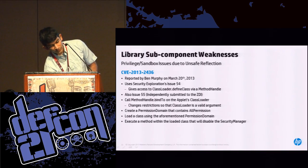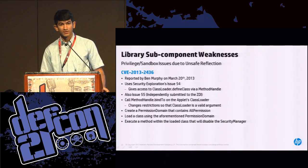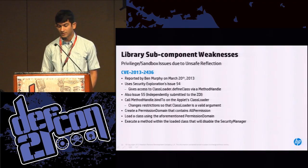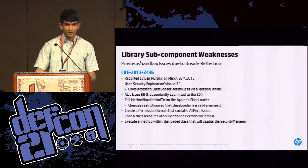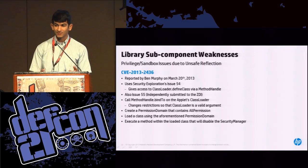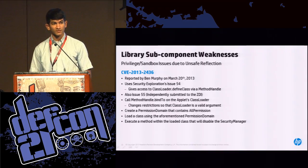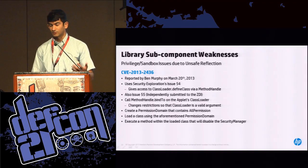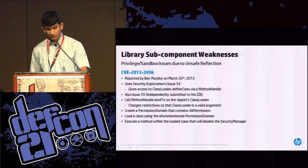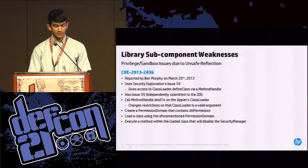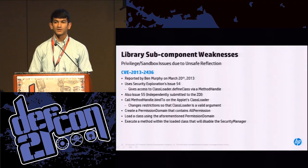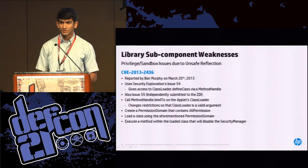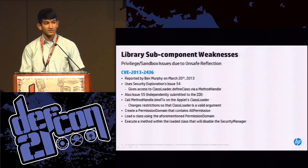The first bug is in the library subcomponent — a privilege and sandbox issue due to unsafe reflection. As a quick primer: imagine you have a dispatch method that takes a string and some arbitrary number of arguments; based on the string, it looks up a function and makes a call. Unsafe reflection is when you don't have proper validation on that string such that you could call a delete-everything method. In CVE-2013-2436, Ben Murphy found that using Security Explorations issue 54 you could achieve a sandbox bypass. Issue 54 makes use of the invokedynamic JVM opcode to get access to a protected method of a class without having an instance of it, requiring a custom-created class — usually using a framework such as ASM2.